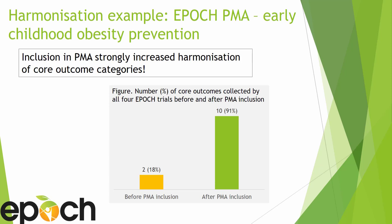How powerful outcome harmonization can be becomes clear when looking at the example of the EPOC prospective meta-analysis on early childhood obesity prevention. Four studies learned about each other just after acquiring funding independently and decided to collaborate in a PMA. Before collaboration, only two of the eleven main outcomes would have been collected by all four studies, so only two could have been meta-analysed. After the decision to collaborate, ten of the eleven outcomes were collected by all four trials and could be meta-analysed, strongly increasing harmonization of core outcome categories.